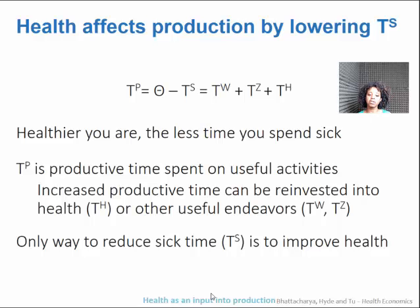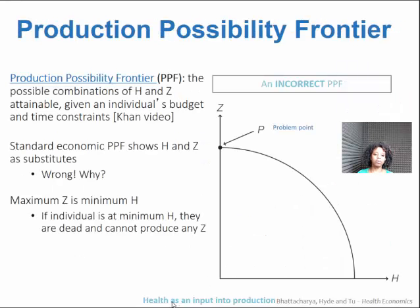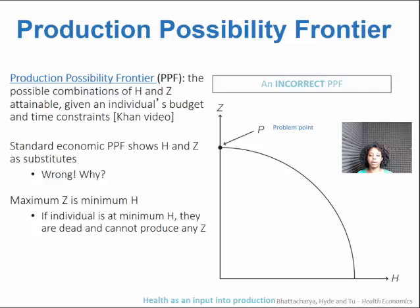The only way to reduce sick time and — on the corollary — to increase your productive time is to improve your health. You might be familiar with the production possibility frontier. If not, you can check out the link in the video to the Khan Academy tutorial about production possibility frontiers.